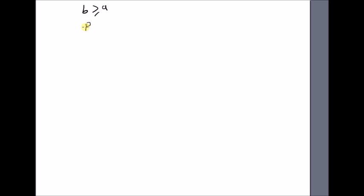Given the value b greater than or equal to a, we want to derive that the probability of the interval a less than x less than or equal to b is equal to the difference between the cumulative distribution function F(x) of b minus F(x) of a.